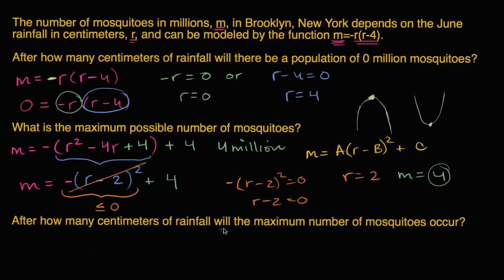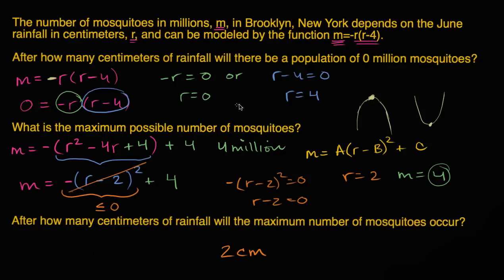They also ask after how many centimeters of rainfall the maximum occurs — we figured it out: two centimeters. So with zero rainfall you have no mosquitoes; as it rains more you get more mosquitoes due to standing water; the maximum of four million mosquitoes occurs at two centimeters of rainfall. After that, rain starts washing away mosquito eggs, and you get fewer and fewer mosquitoes until four centimeters. After four centimeters, the model would describe negative mosquitoes, which doesn't make sense, so the model is only valid between zero and four centimeters of rainfall.